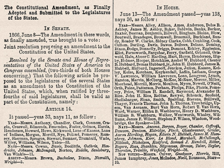Section 3. No person shall be a senator or representative in Congress, or elector of president and vice-president, or hold any office, civil or military, under the United States, or under any state, who, having previously taken an oath, as a member of Congress, or as an officer of the United States, or as a member of any state legislature, or as an executive or judicial officer of any state, to support the Constitution of the United States, shall have engaged in insurrection or rebellion against the same, or given aid or comfort to the enemies thereof. But Congress may, by a vote of two-thirds of each House, remove such disability.